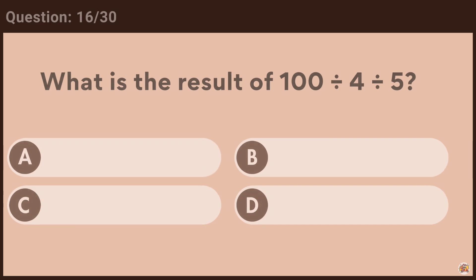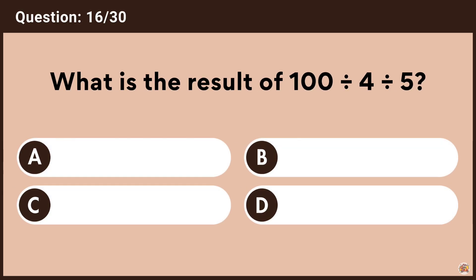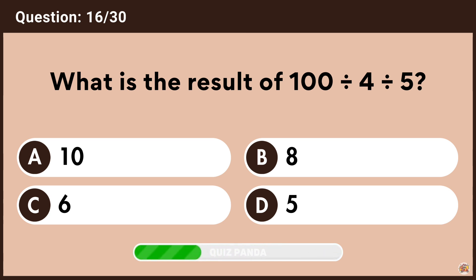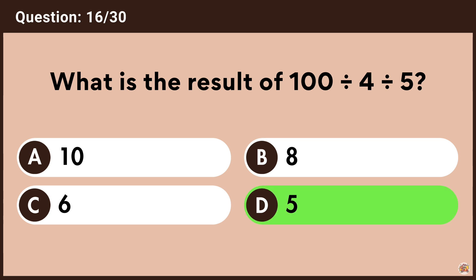What is the result of 100 divided by 4 divided by 5? Answer D, 5.